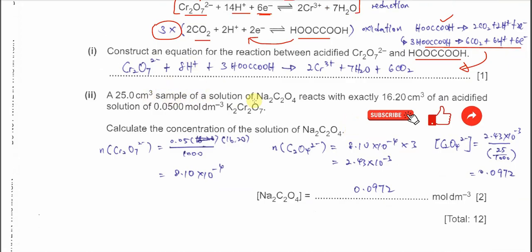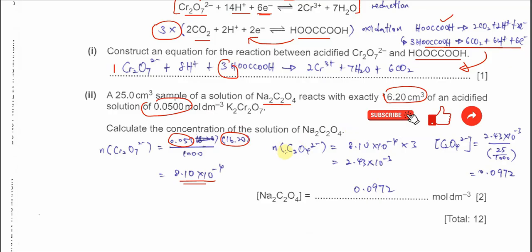Part 2: a 25 cm³ sample of sodium ethanedioate solution reacts with exactly 16.2 cm³ of 0.05 mol dm⁻³ potassium dichromate. Calculate the concentration of sodium ethanedioate. First, moles of dichromate = 0.05 × 16.2/1000. Then apply the mole ratio of dichromate to ethanedioate, which is 1:3 from the equation, so moles of ethanedioate = 3 × moles of dichromate = 2.43 × 10⁻³ mol.